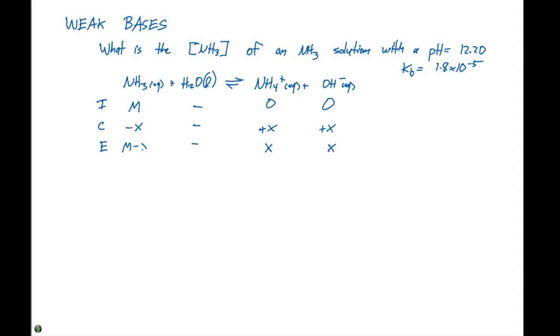And the NH3 is gonna be M minus x. So if we set up our KB expression we can say this is gonna be the concentration of x times the concentration of x divided by the concentration of M minus x. And that's gonna equal 1.8 times 10 to the minus 5.